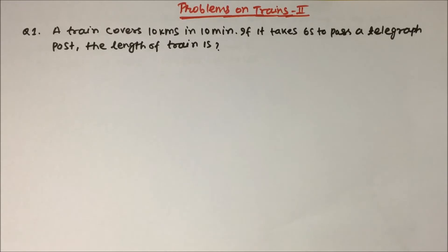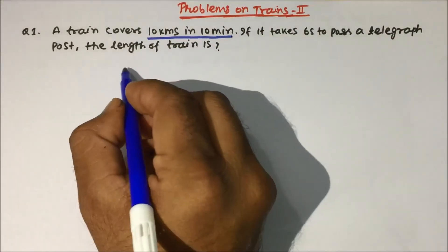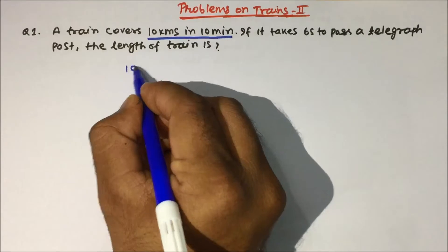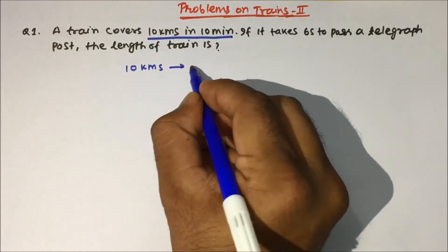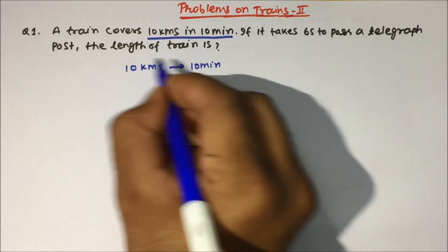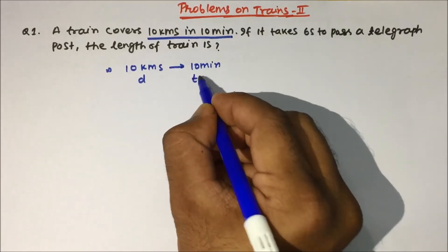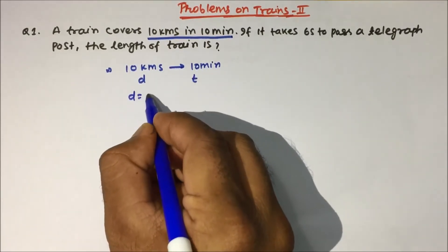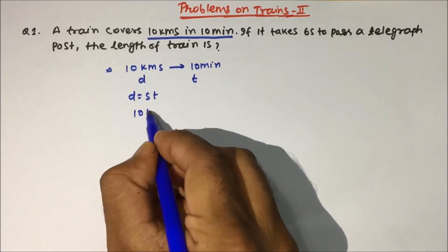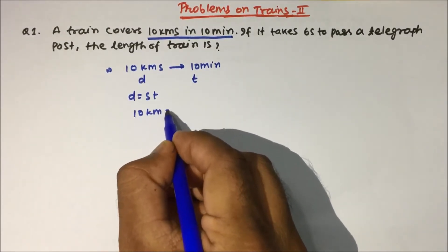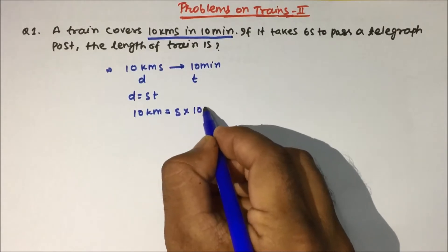The question is: a train covers 10 kilometers in 10 minutes. Since the distance is given and the time is given, we can use the formula d = s × t. So distance will be 10 kilometers, speed we have to calculate, and time will be 10 minutes.